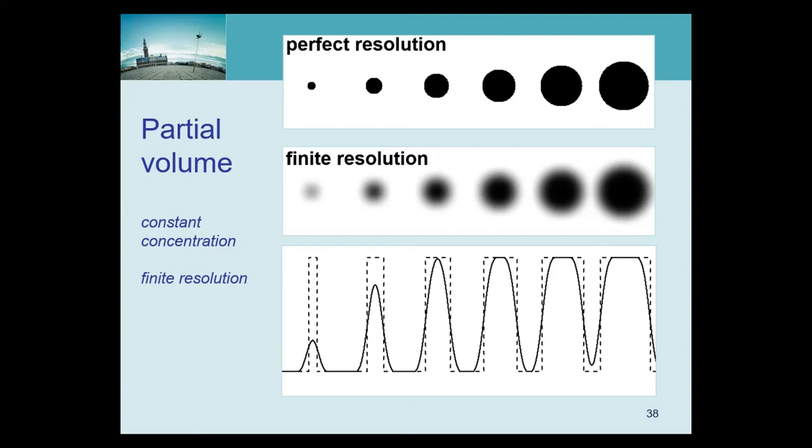The blob get contributions from neighboring activity, and they all get mixed in that same blob. And so we can still call it partial volume effect, we do, and the effect is that we don't see the true concentration anymore.